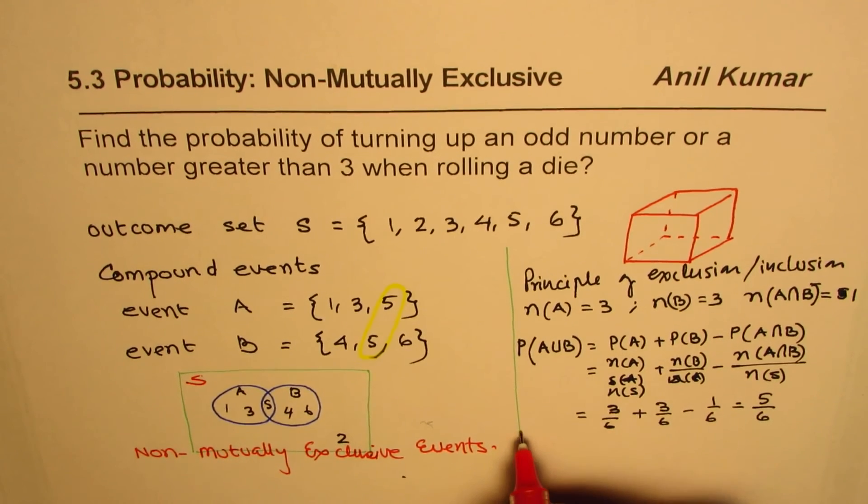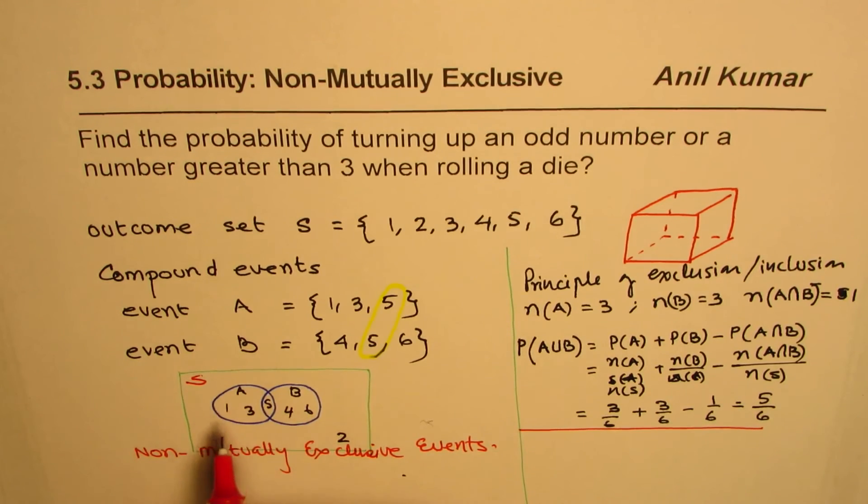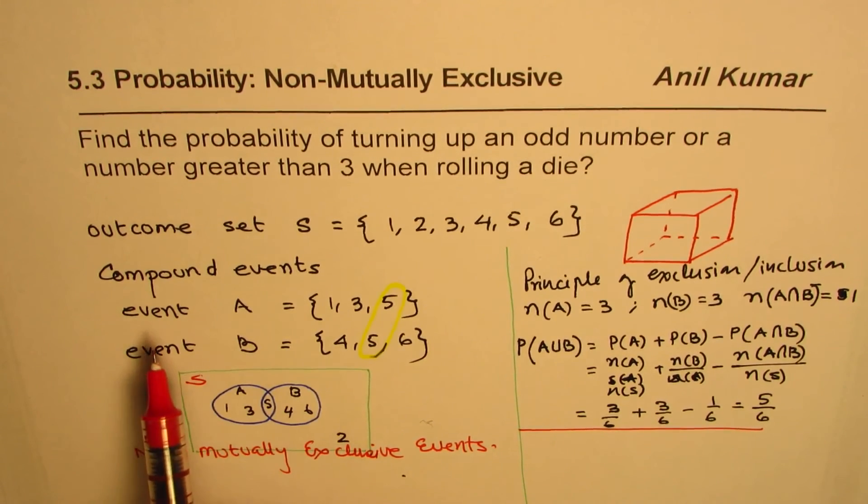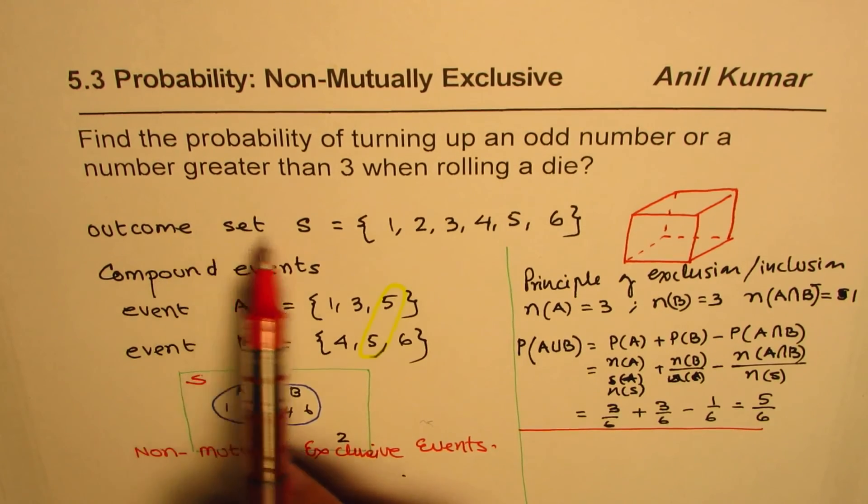So that is how we can find the probability of such a compound event, which is non-exclusive. The other simpler method was, of course, we can find in the union of A and B, how many elements are there? 1, 2, 3, 4, 5.